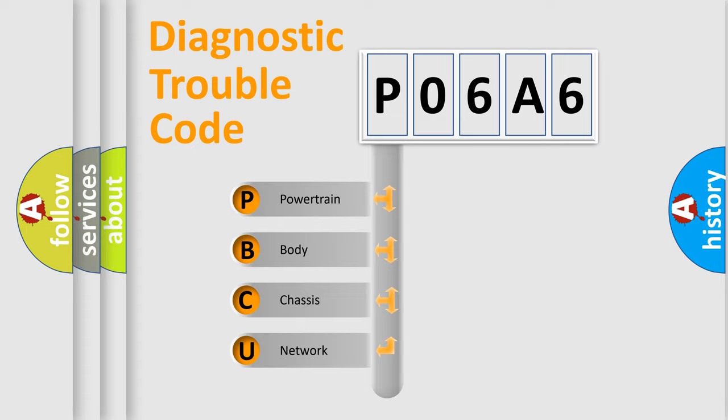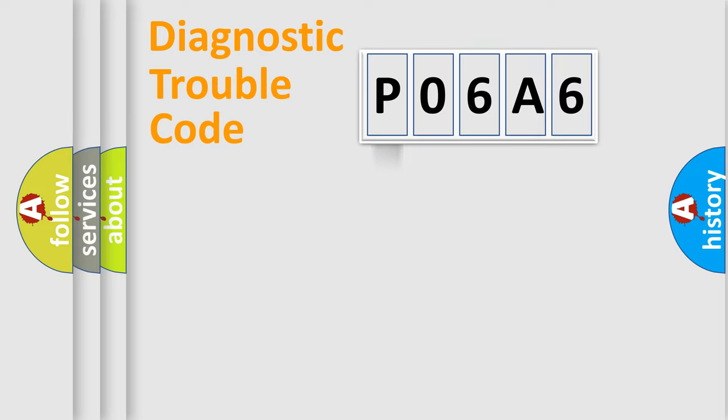We divide the electric system of automobile into four basic units: powertrain, body, chassis, and network. This distribution is defined in the first character code.